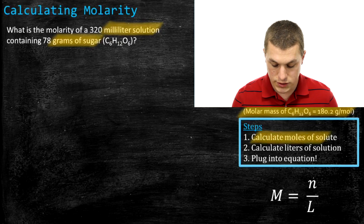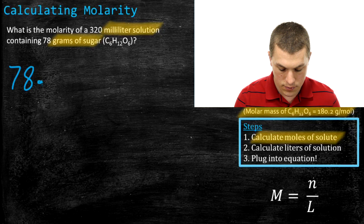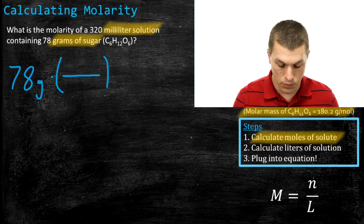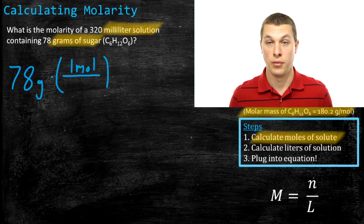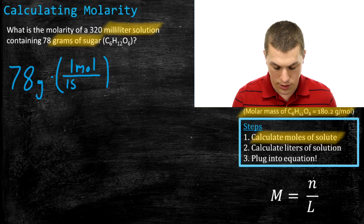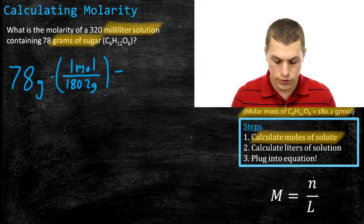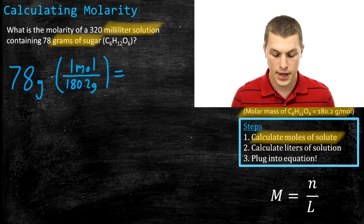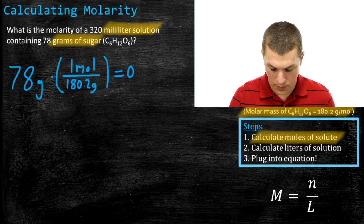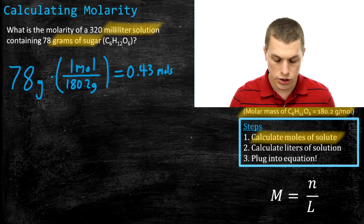Step one: calculate moles of solute. We start with 78 grams of sugar and multiply by the conversion factor: 1 mole on top and 180.2 grams on the bottom. That molar mass tells us 180.2 grams of glucose equals exactly one mole. When we do that division, we get 0.43 moles of sugar.